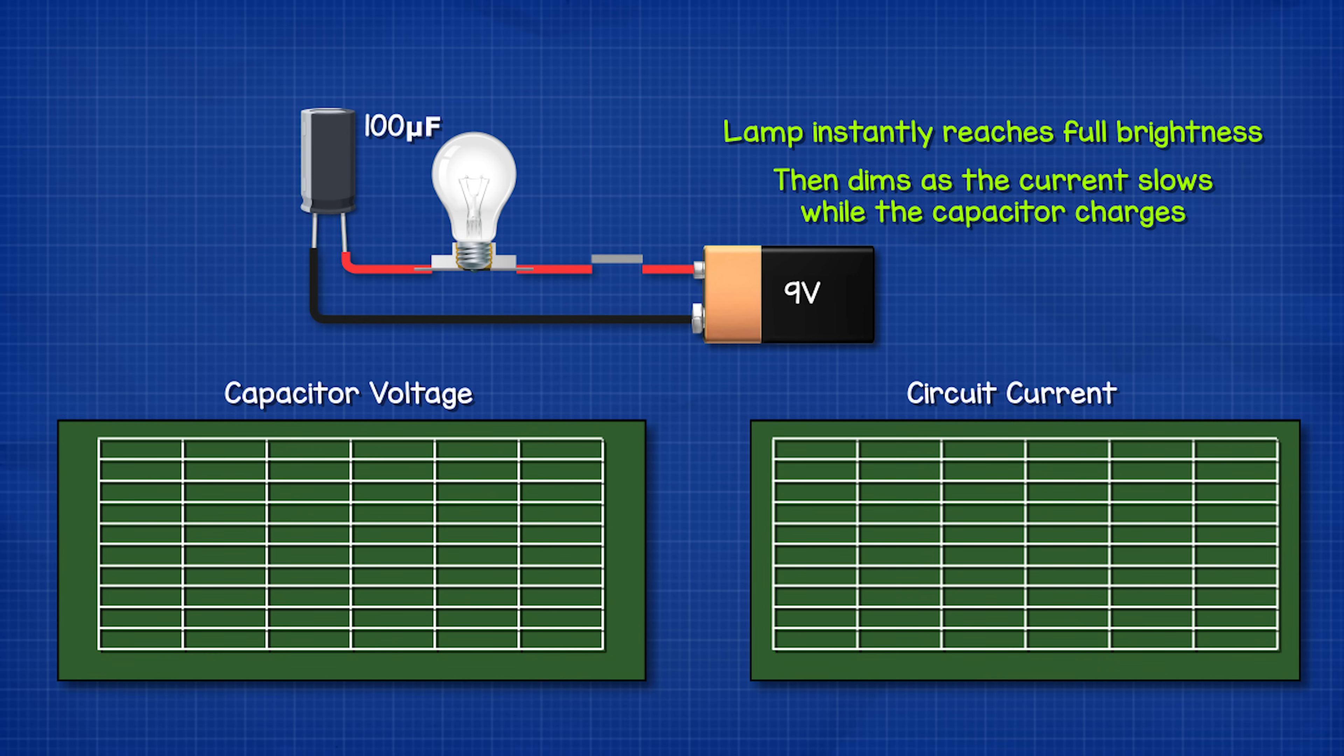If the resistor was a lamp it would therefore instantly reach full brightness when the switch was closed. But then becomes dimmer as the capacitor reaches full voltage.